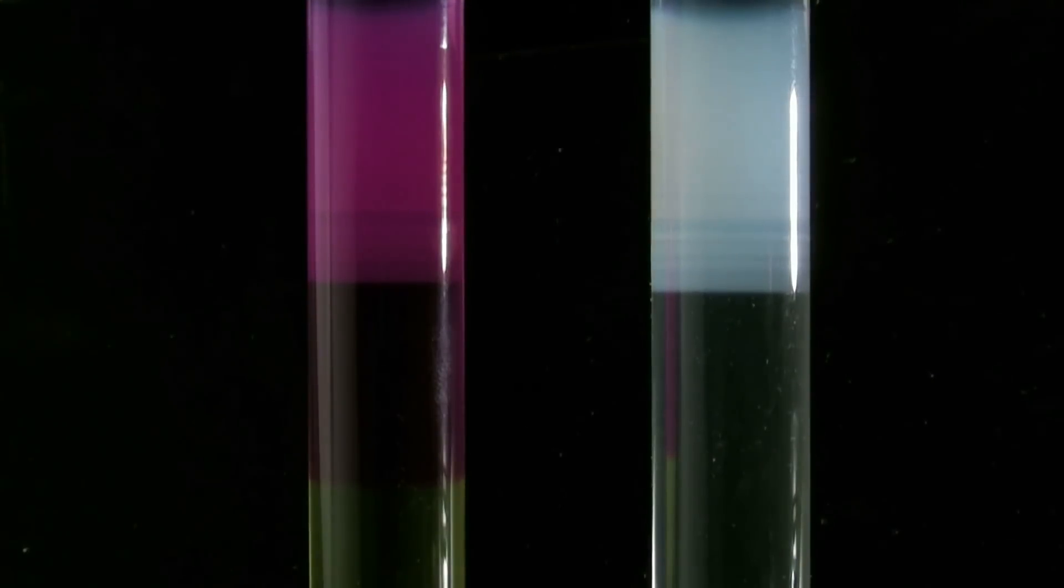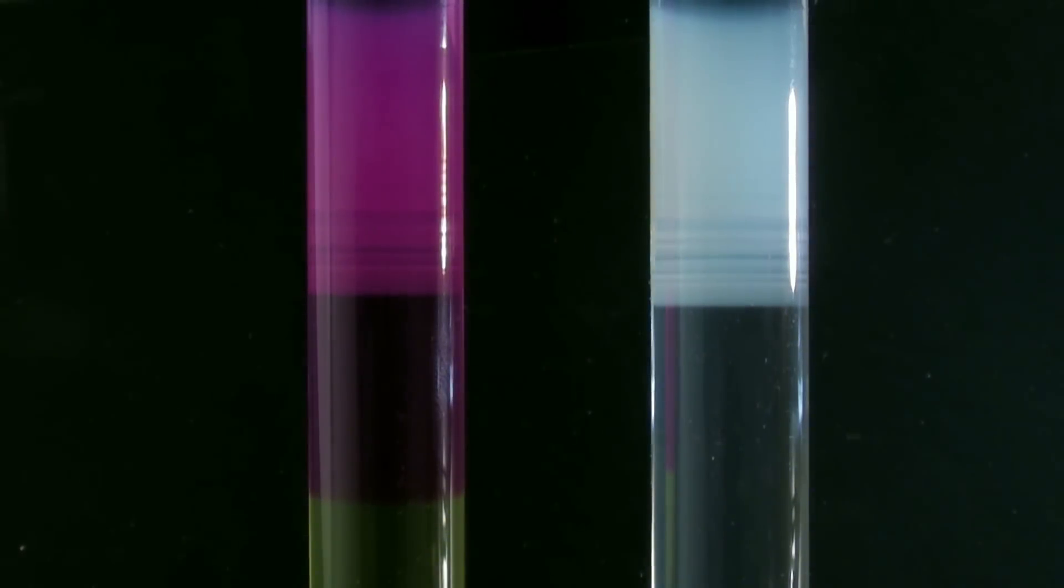One of the few things that can destroy the rings is when the gelatin becomes too hot and liquefies again. Here the test tube was accidentally heated by the strong spotlight.